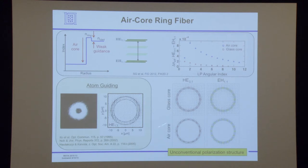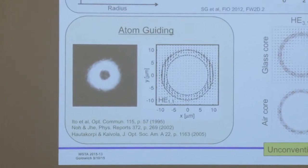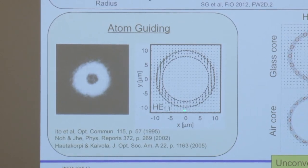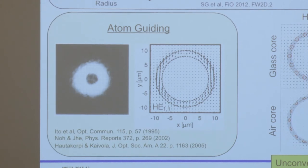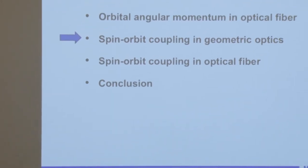We weren't actually the first to notice something like this. The atom-guiding community actually studied air-core fibers back in the mid-nineties. They only looked at fundamental modes, but they did notice that these polarization states should be linearly polarized and they're not. So this unconventional polarization was present back then.